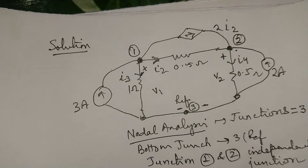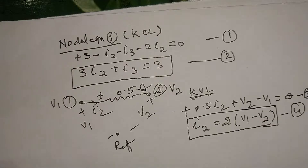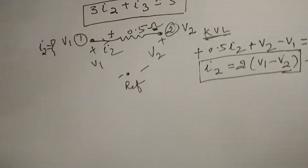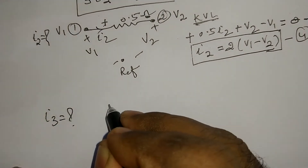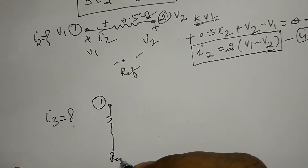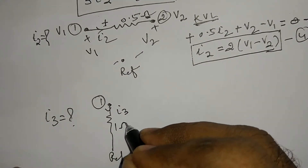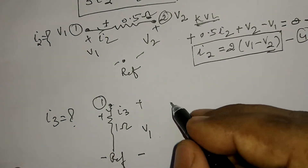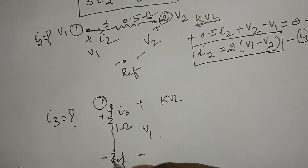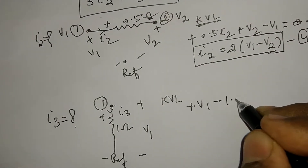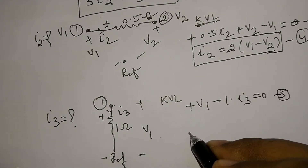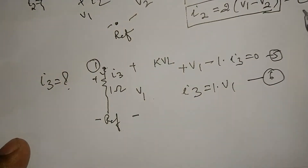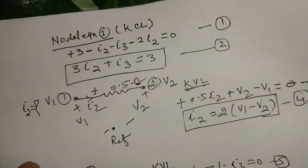Now, I3 is flowing in the 1 ohm resistance from node 1 to reference. To calculate I3, the resistance is 1 ohm and between node 1 and reference the node voltage is V1. According to KVL, plus V1 minus 1 times I3 is equal to 0, therefore I3 is equal to V1. Substituting the values of I2 and I3 obtained into equation number 2: 3 times (2(V1 minus V2)) plus V1 is equal to 3.